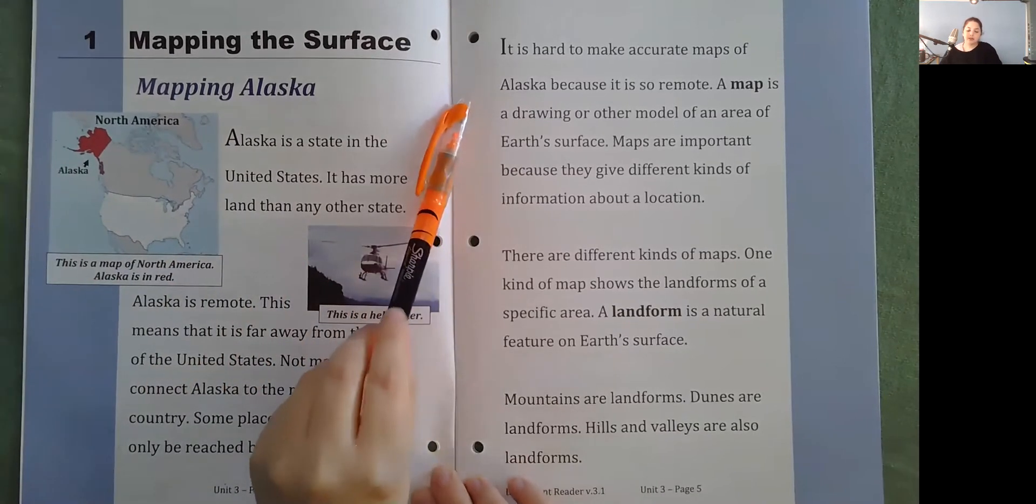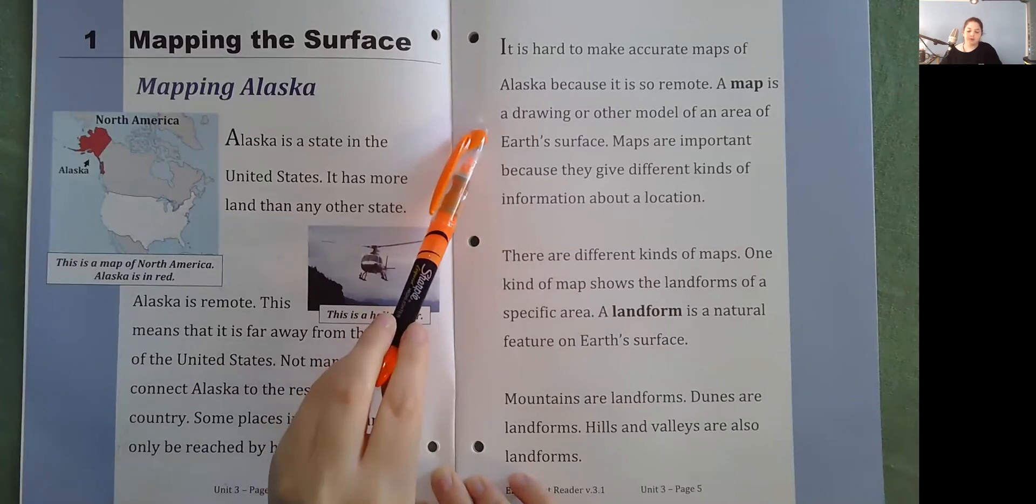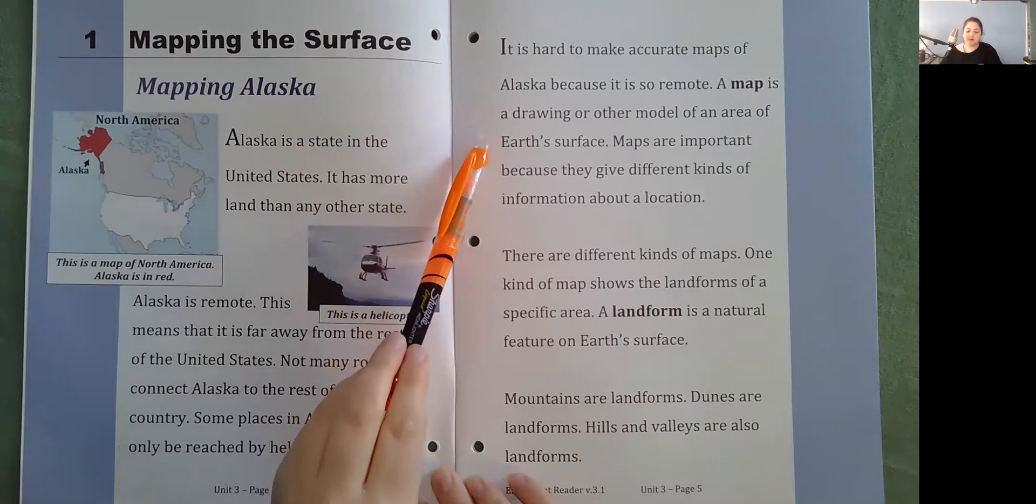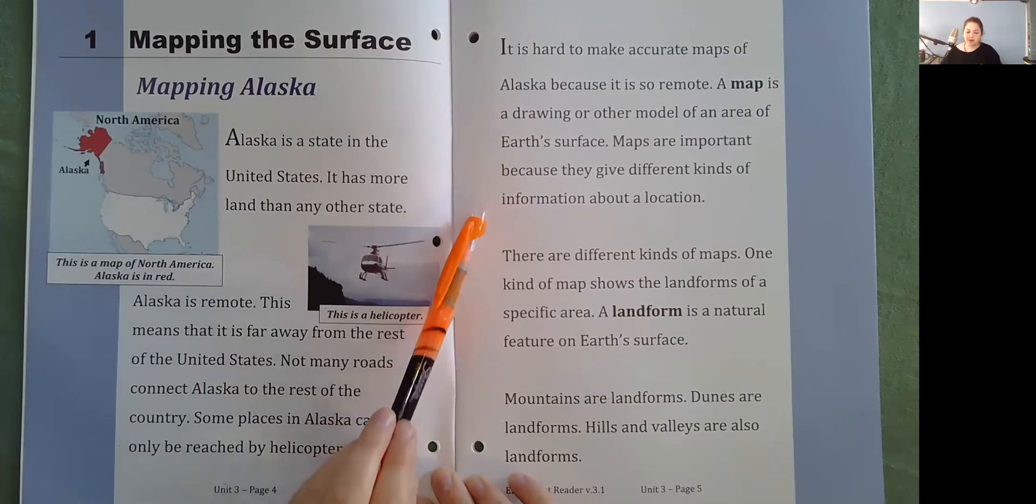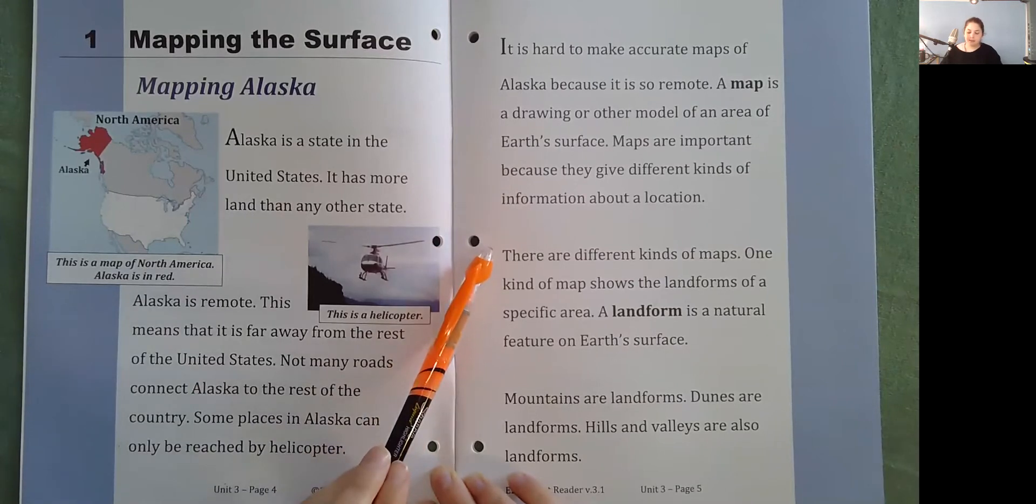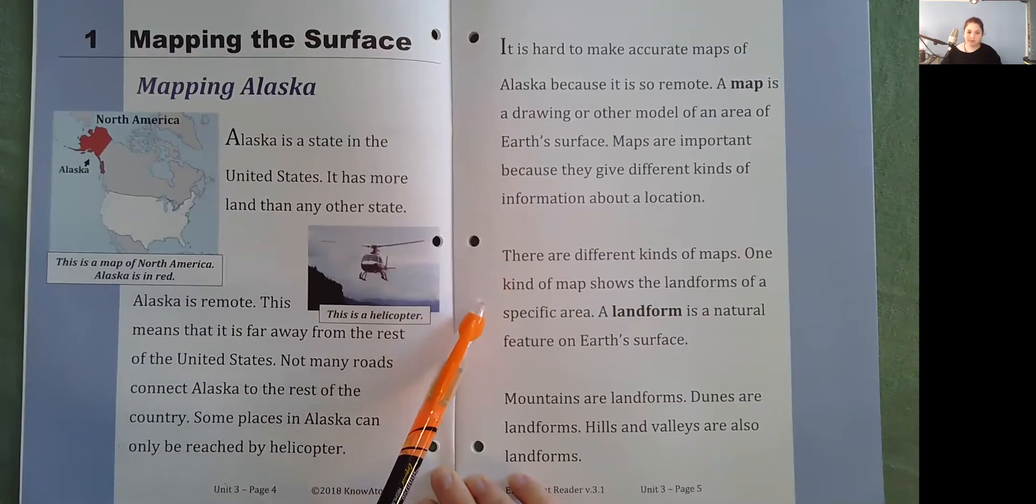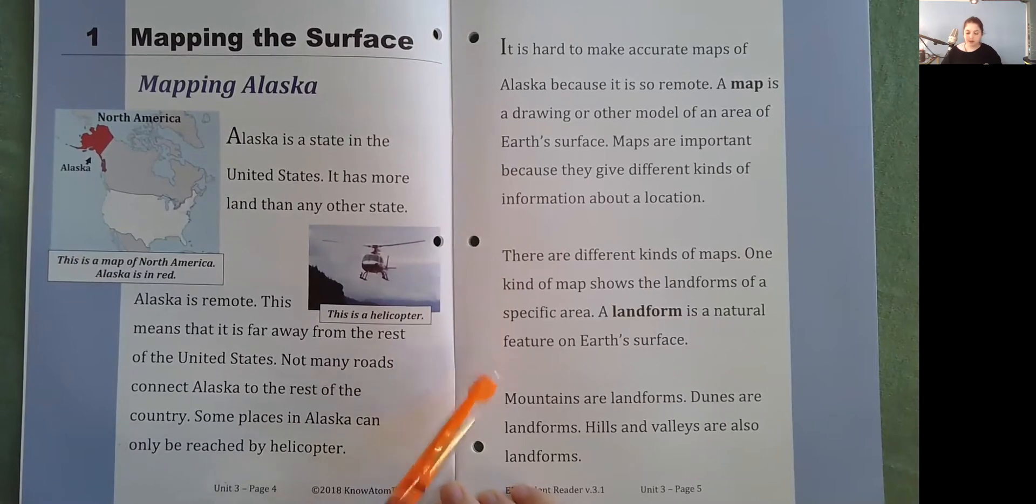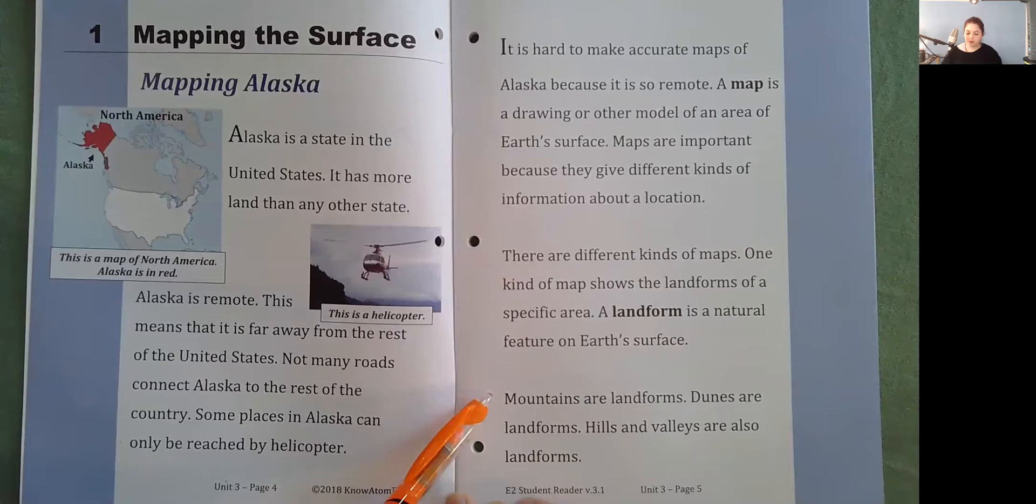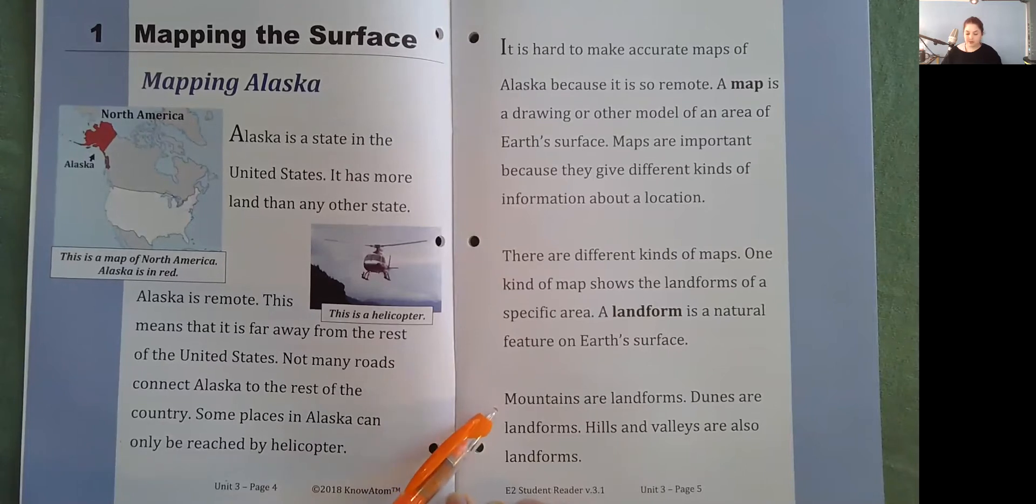It is hard to make accurate maps of Alaska because it is so remote. A map is a drawing or other model of an area of Earth's surface. Maps are important because they give different kinds of information about a location. There are different kinds of maps. One kind of map shows the landforms of a specific area. A landform is a natural feature on Earth's surface. Mountains are landforms. Dunes are landforms. Hills and valleys are also landforms.